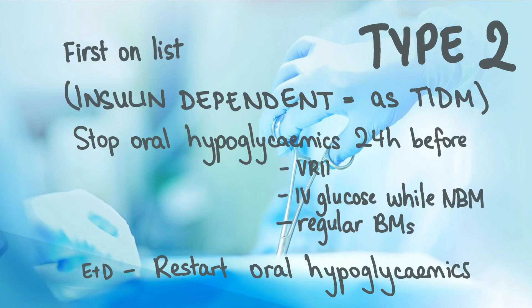For type 2 diabetics, management for surgery is very similar to type 1 diabetics, especially if they are insulin dependent. If their diabetes is diet-controlled then no action is required. If they take oral hypoglycaemics like sulfonylureas, pioglitazone, gliptins, SGLT2 inhibitors or acarbose, then these must be stopped 24 hours before an elective procedure and patients should be started on a variable rate insulin infusion alongside 5% dextrose to prevent hypoglycaemia while nil by mouth. Oral hypoglycaemics should only be restarted once a patient is eating and drinking again. Metformin can be taken until the morning of surgery, where the dose should be skipped to reduce the risk of lactic acidosis.